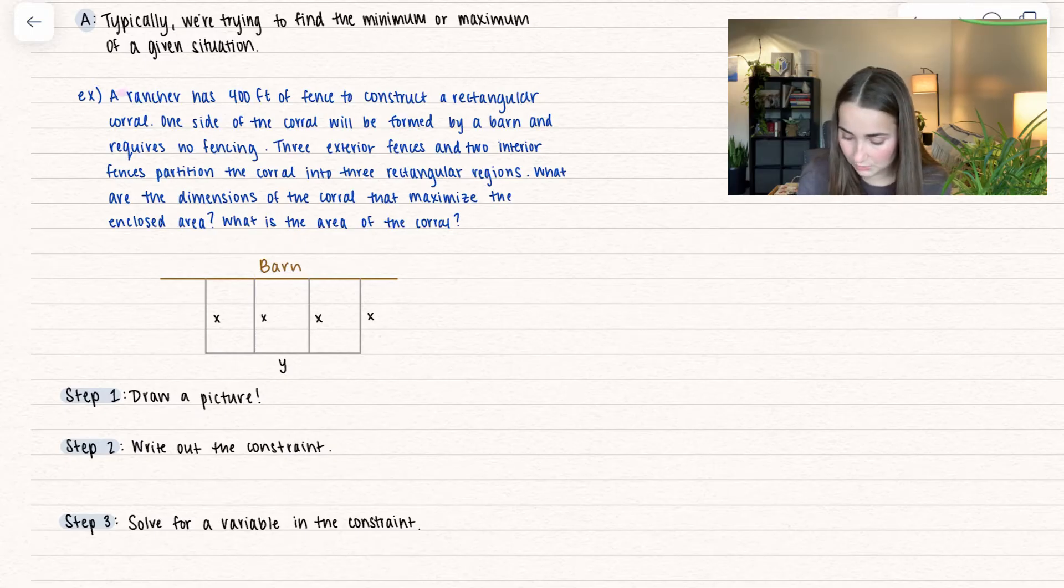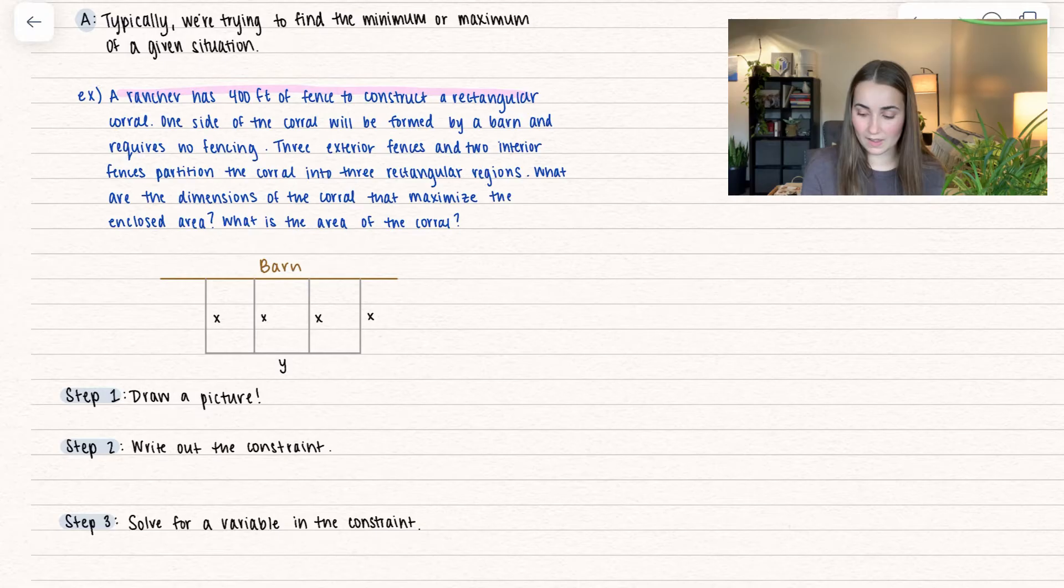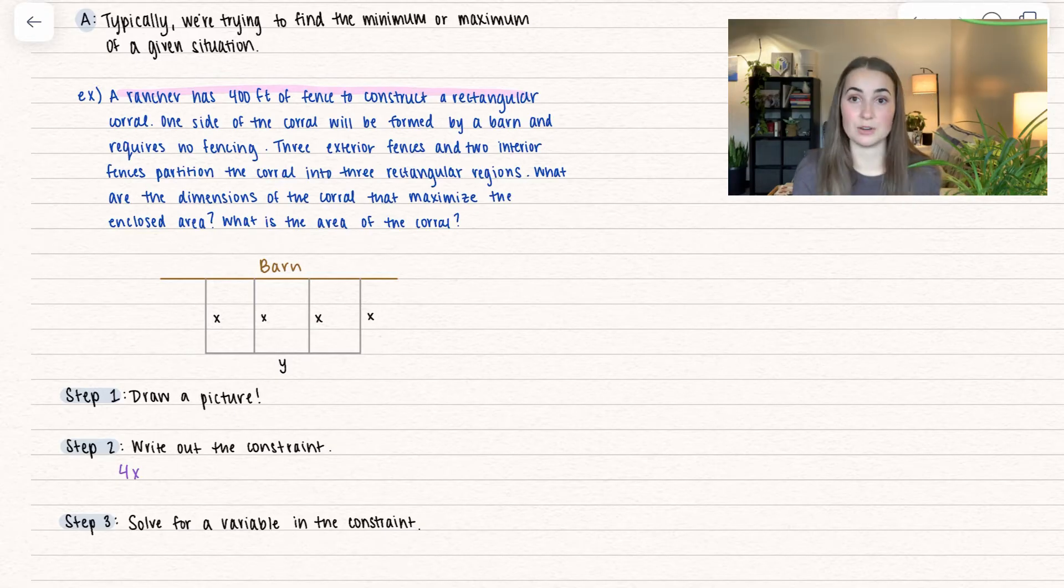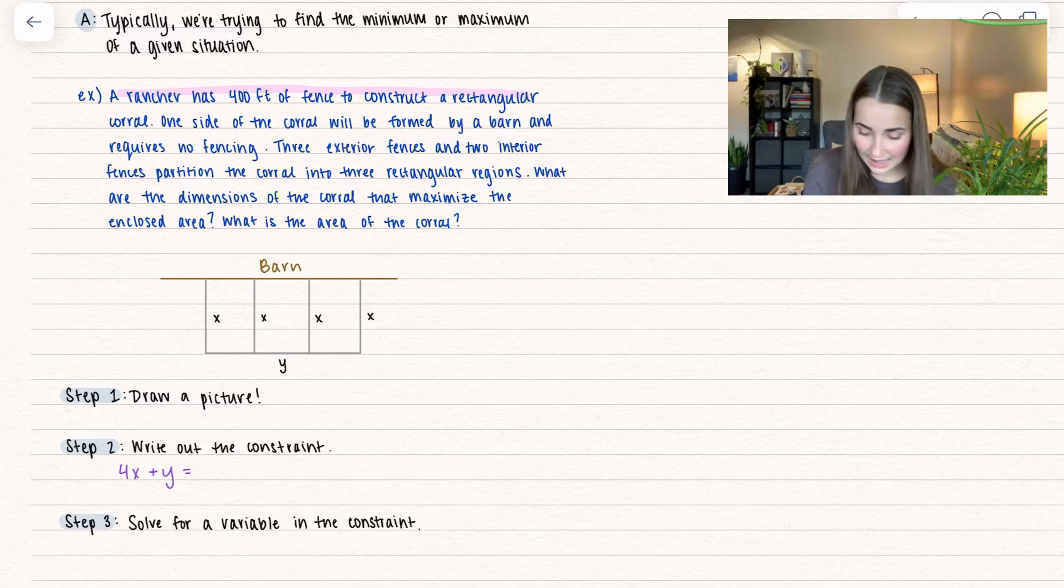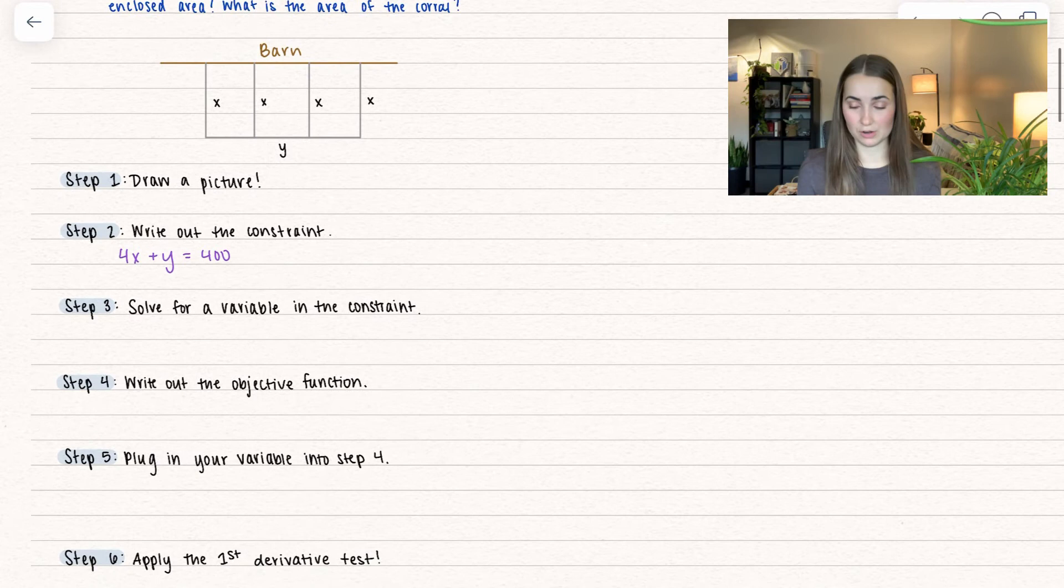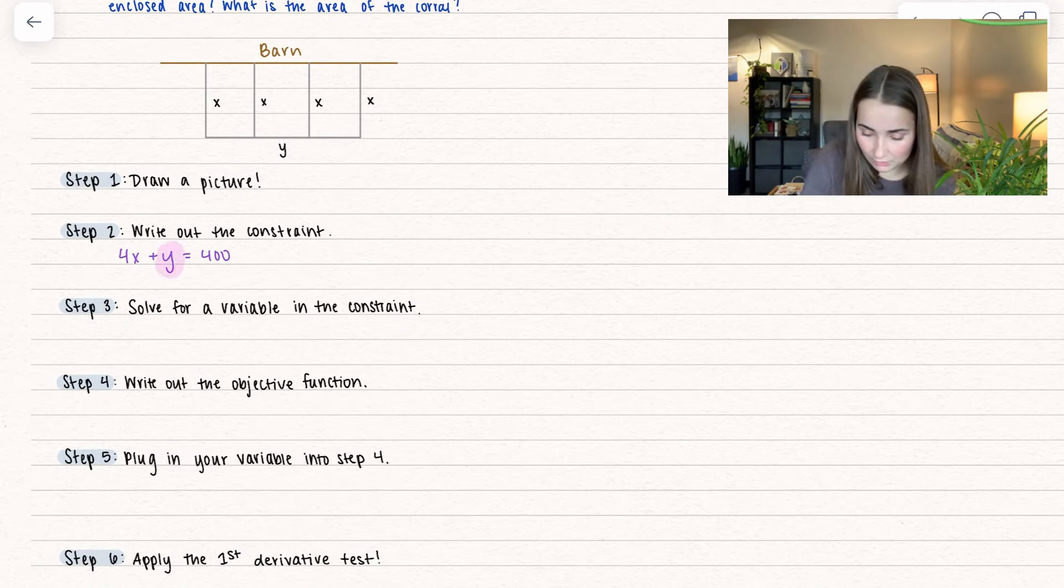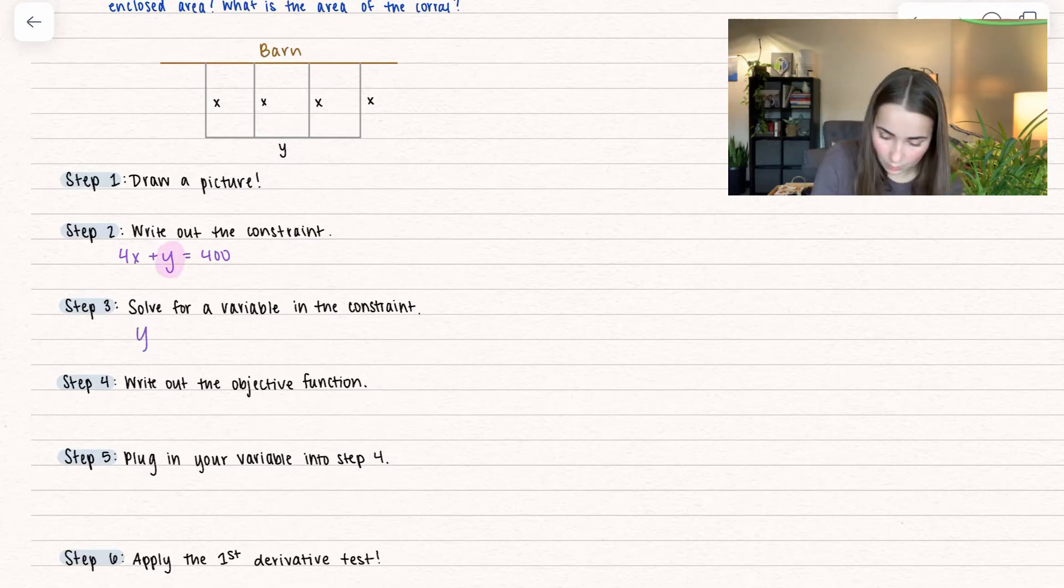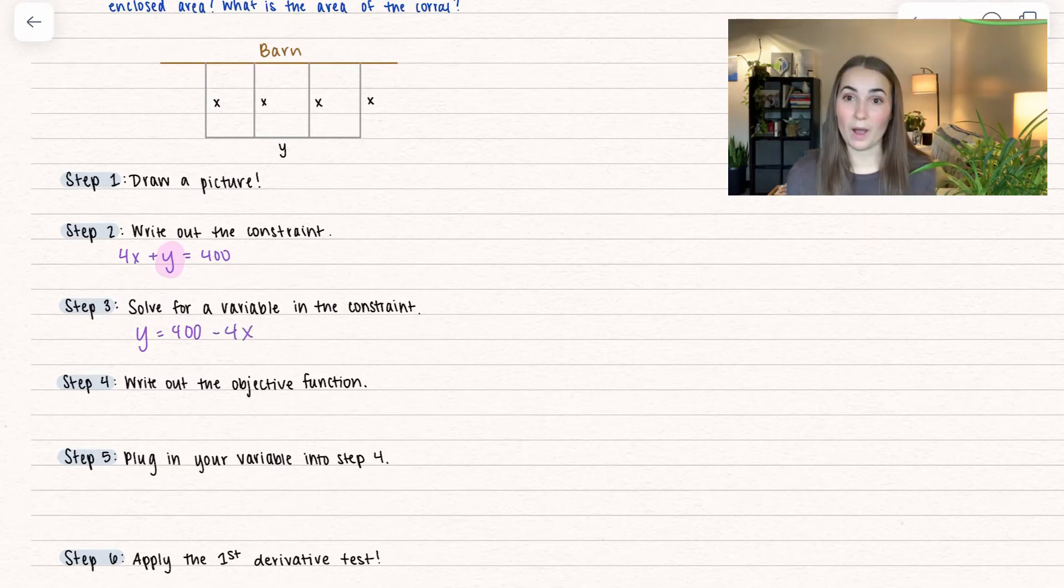Since we have 400 feet of fencing, our perimeter cannot exceed 400 feet. This gives us four X's because we have four interior fences plus that Y on the outside. This equals 400 - this is our constraint. Typically we work with two separate variables and solve for one. I'm going to solve for Y because it's by itself. Subtracting over 4X, I get Y equals 400 minus 4X.